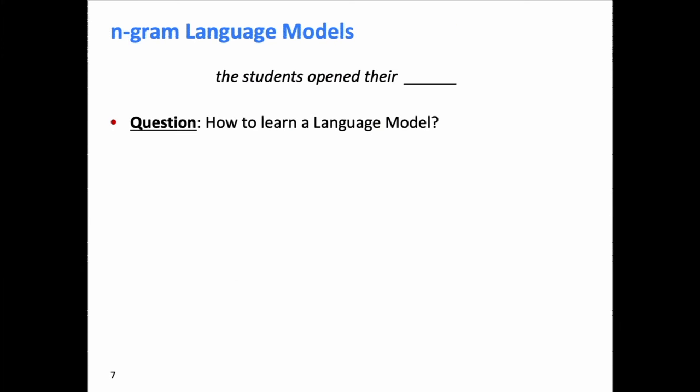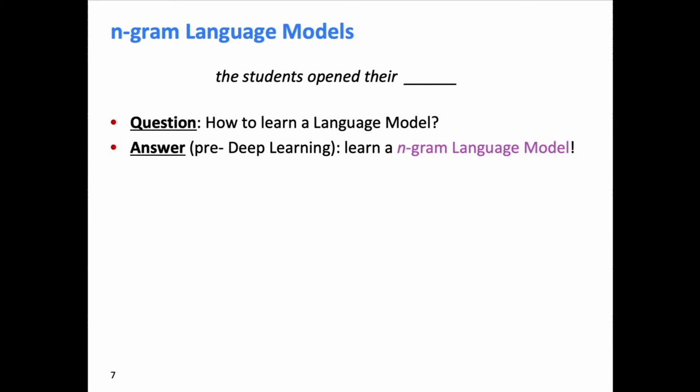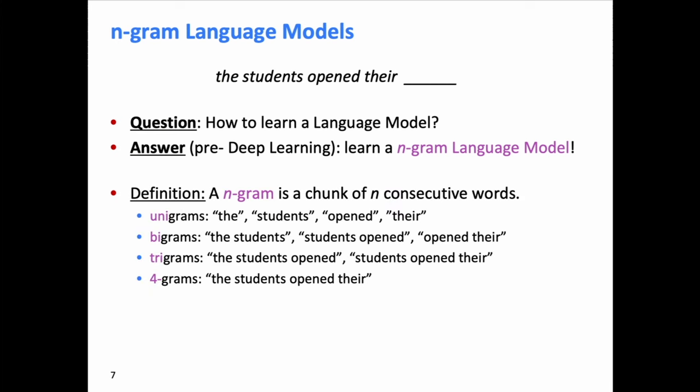So that's what a language model is. The question is, how would you learn one? In the pre-deep learning era, the answer would be an n-gram language model. An n-gram is a chunk of n consecutive words. A 1-gram or unigram is all individual words; a 2-gram or bigram is all consecutive pairs of words — 'the students,' 'students opened,' 'opened their' — and so on for trigrams and 4-grams, et cetera.